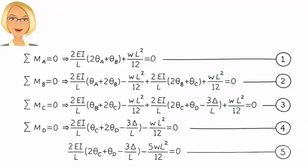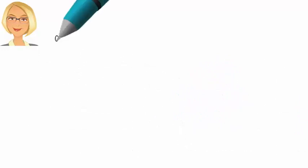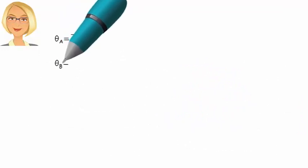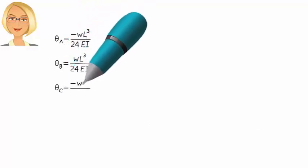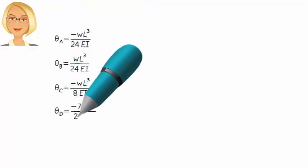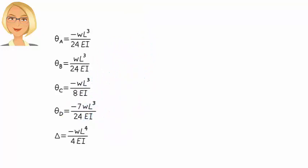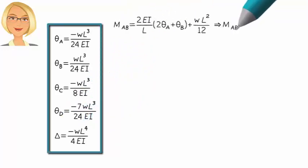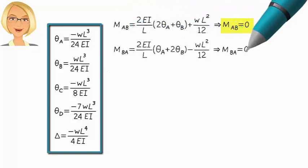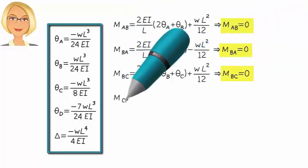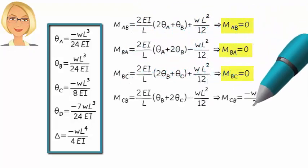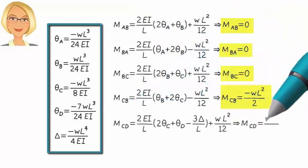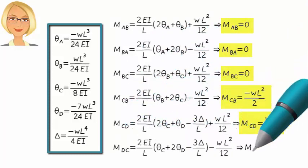Solving these equations simultaneously, we get the values for the unknown rotations and delta. Then, we substitute these values back into the slope deflection equations to determine our member end moments.